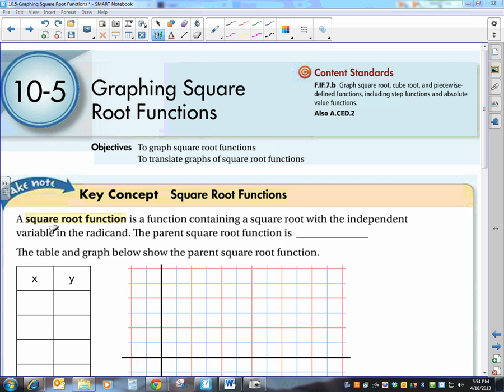So to start off, remember that a square root function is any function that contains a square root with the independent variable in the radicand. So what does that really look like? That looks like y equals the square root of x. This is our parent square root function.